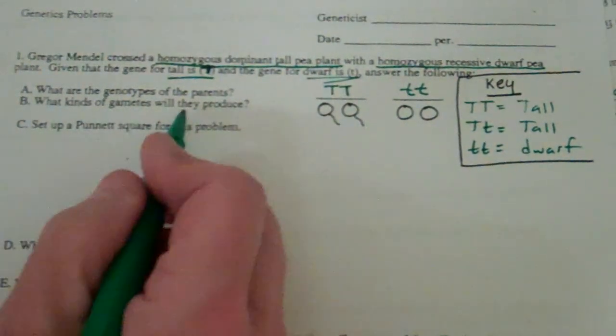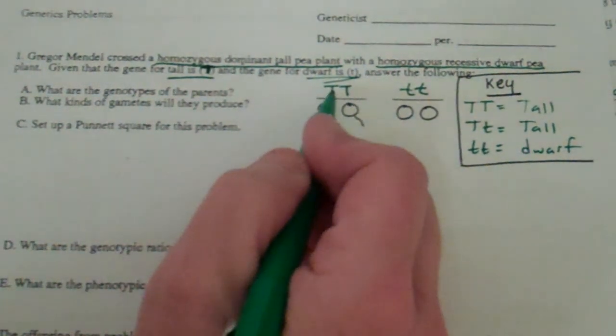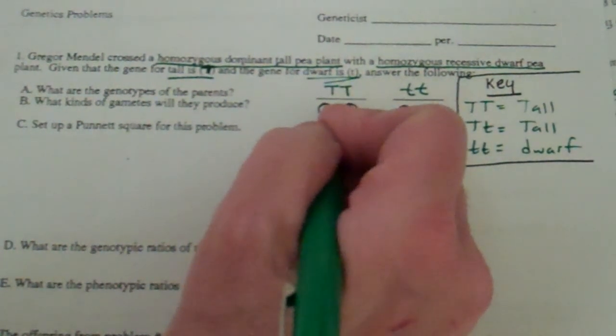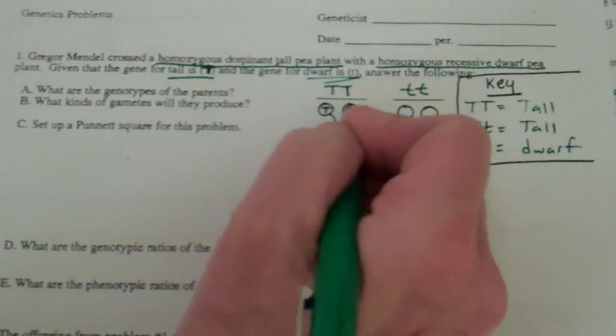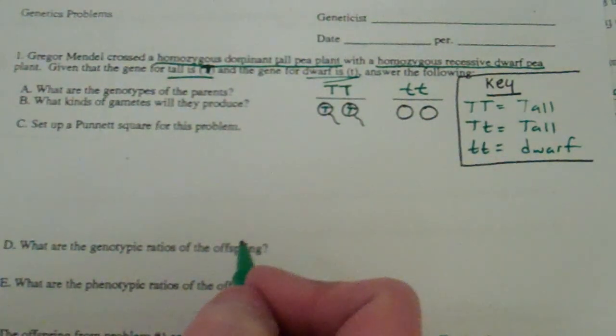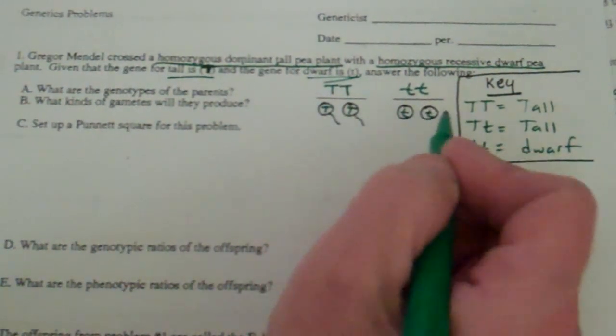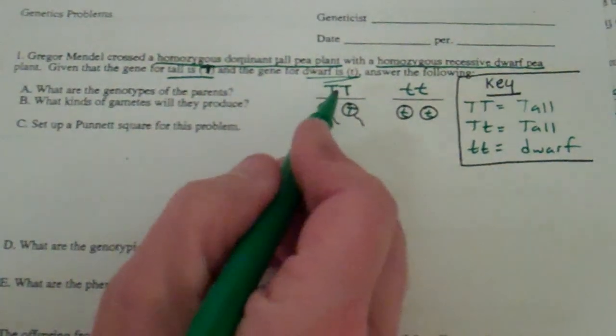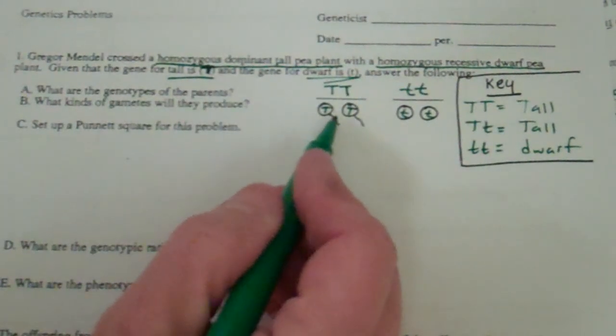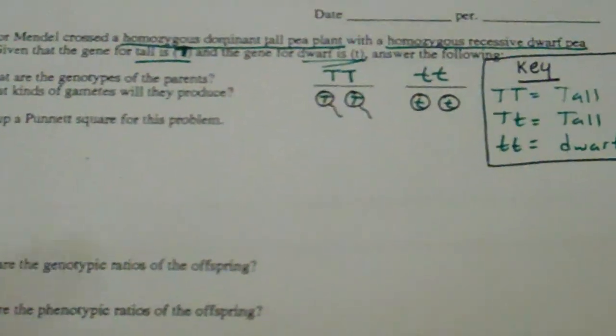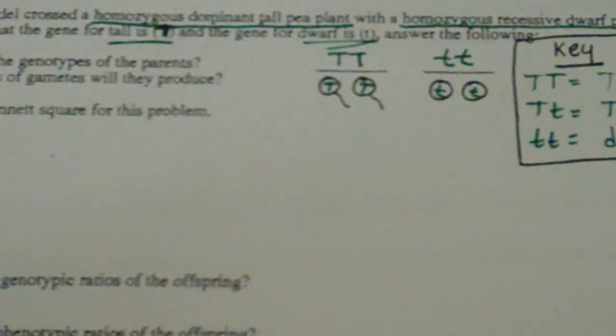What kind of gametes can they produce? Separate this gene pair. Put a big T in one sex cell, a big T in the other sex cell. Put a little t in one sex cell and a little t in the other sex cell.